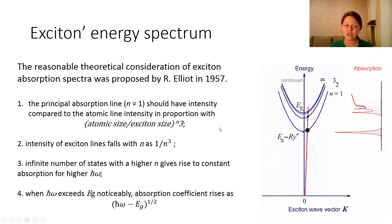The intensity of exciton lines should fall with n at this dependence. The infinite number of states with higher n gives rise to constant absorption for higher photon energies.